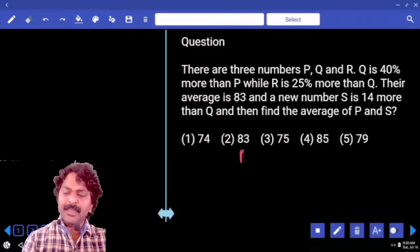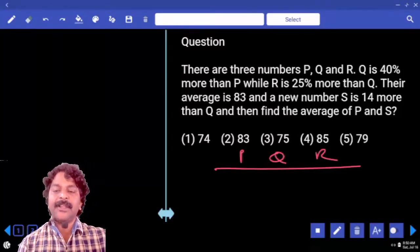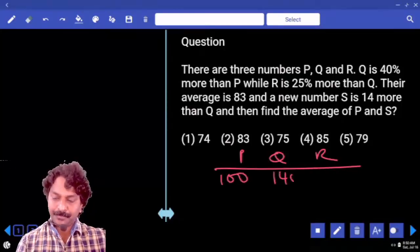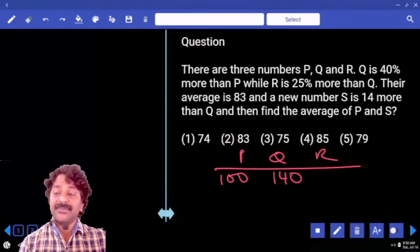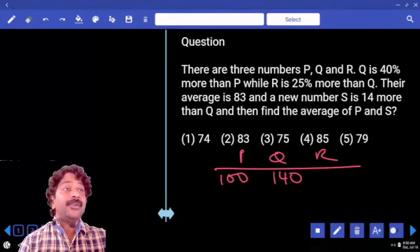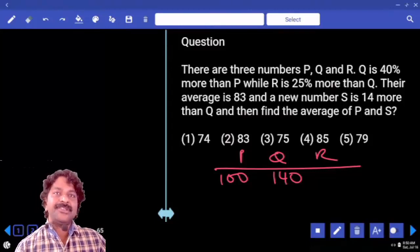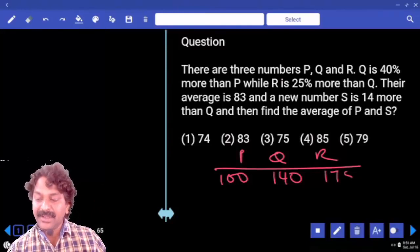Now we have P, Q, R. Q is 40% more than P. If P is 100, Q becomes 140. R is 25% more than Q, 25% calculated on 140, which is 35, 35 more in the sense, 175.